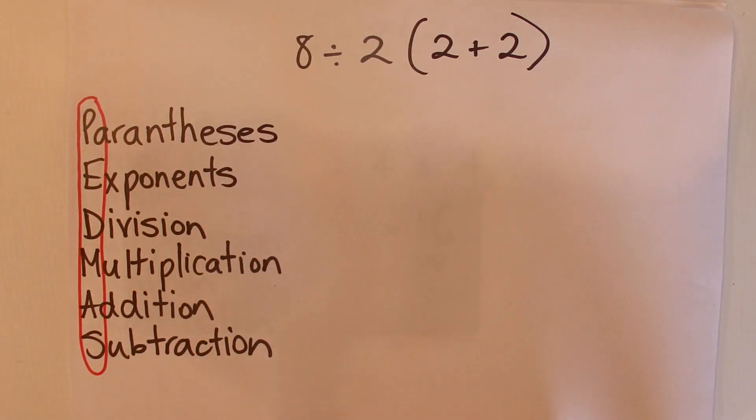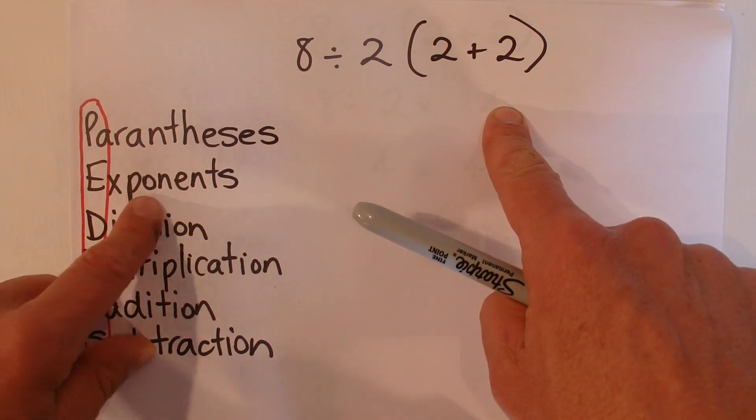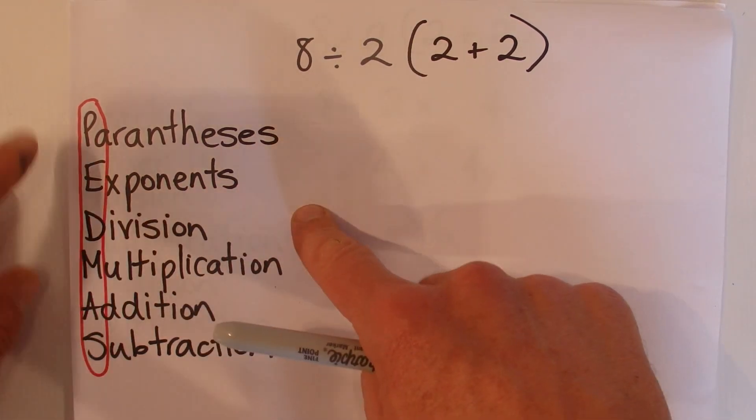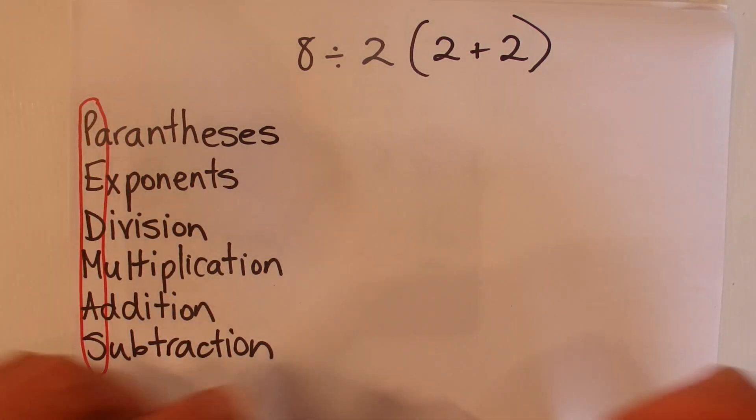That's Parentheses (which is what I call brackets), Exponents (which is what I call to the power of), and then Division, Multiplication, Addition, and Subtraction, which is all the same.